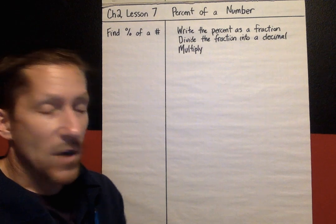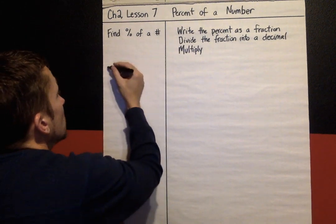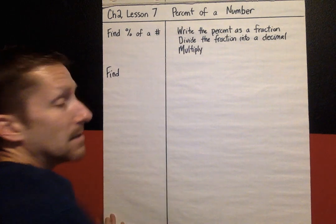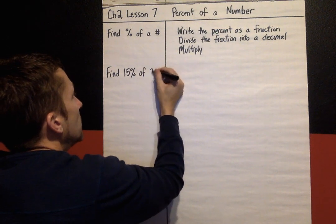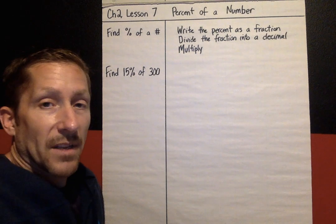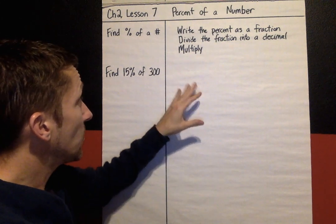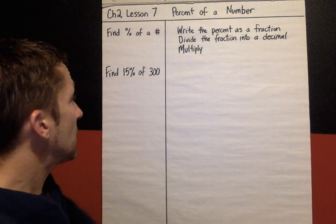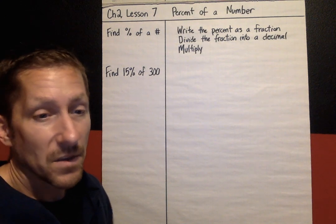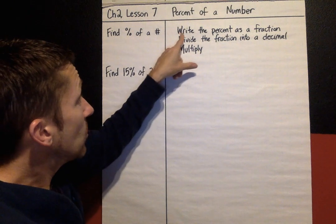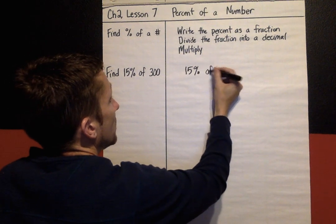So those are our steps. Every time we follow those steps, and here's what they look like in some examples. So first example, find 15% of 300. So these are pretty nice numbers. There's other ways that you could solve this, showing your work in other ways besides this, but I'm still going to follow these steps for our examples.